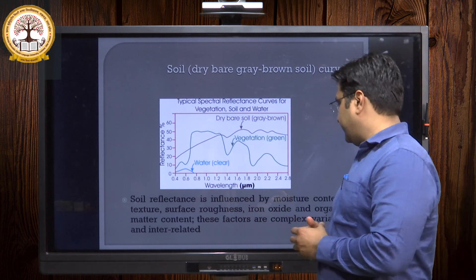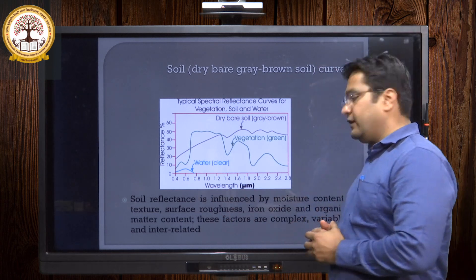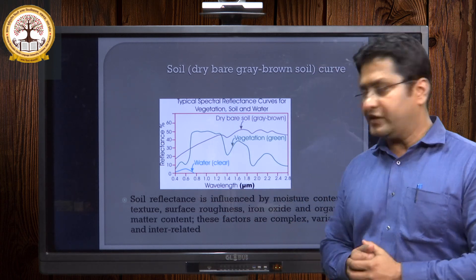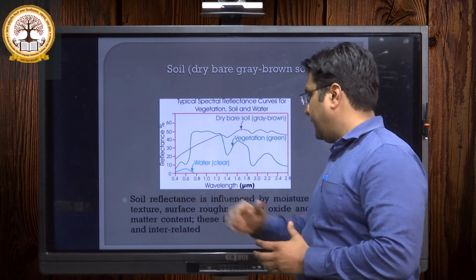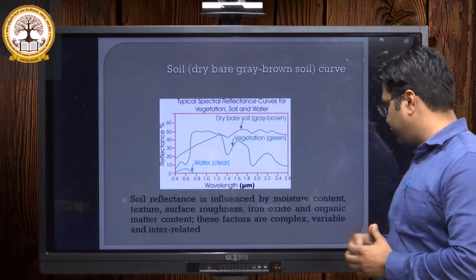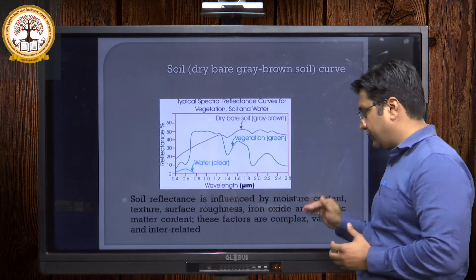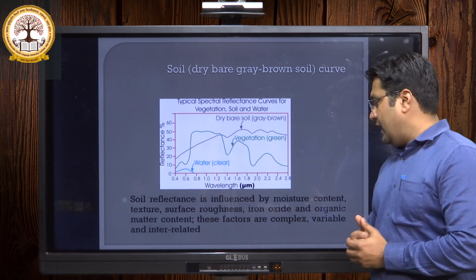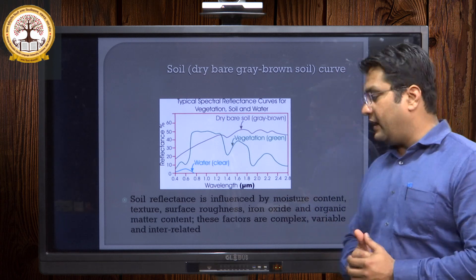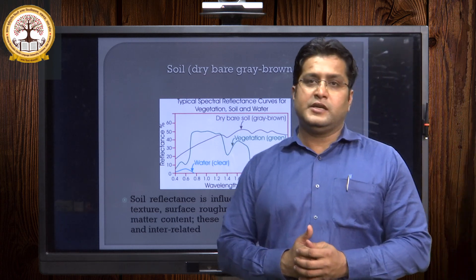Spectral reflectance is basically influenced by the presence of moisture content, texture, surface roughness, iron oxide, and organic matter content. These factors are complex variables and are interrelated with one another.